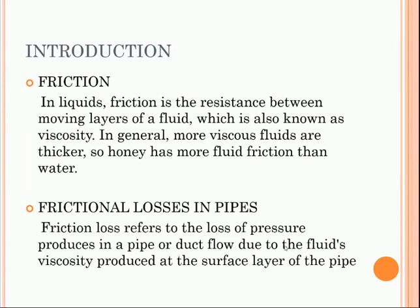What is friction loss in pipes? Friction loss refers to the loss when a fluid tries to flow through a pipe — a resistance occurs between the internal area of the pipe and the fluid particles. This causes a loss in pressure, known as friction losses. This pressure loss is due to the loss in energy of the particles to overcome the viscous force exerted by the walls of the pipe.